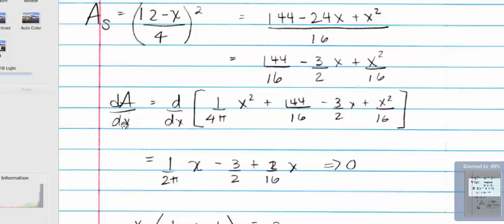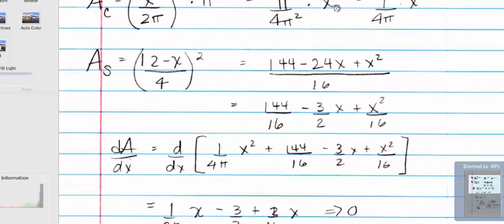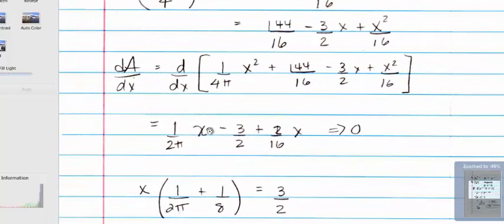So now up here, we're taking the derivative of these two functions. So the derivative of this one is, oh, I see what I did. I just rewrote it. So this is the derivative of this 1 over 4 pi times x squared plus the derivative of this. So now we take the derivative of each one of these addends, which is 1 over 2 pi x. Again, this becomes 0 because the derivative of a constant is 0, minus 3 halves, plus 2 16ths times x. And we want to set that equal to 0.